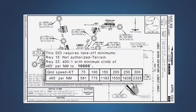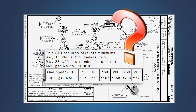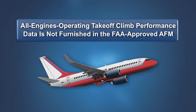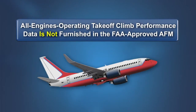As noted earlier, the climb gradient published on an IFR departure procedure is based on normal all-engines-operating performance. This often leads to a question: how do I know whether my airplane can meet the published climb requirement? This is not a subject addressed by the certification rules. Therefore, all-engines-operating takeoff climb performance data is not furnished in the FAA-approved airplane flight manual. While there is a requirement to furnish one-engine-inoperative climb performance data in the AFM, using this data to show compliance with a climb requirement published on an IFR departure procedure is not required by any operating regulation. Some manufacturers may provide supplementary all-engine climb performance data, but if that data is not available, pilots should use their knowledge of the airplane's normal performance capabilities.